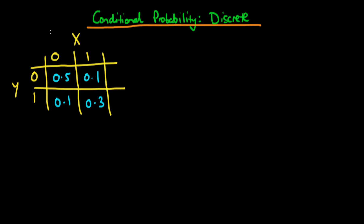I'm going to use the same example as previously, where a random variable X represents whether or not an individual chosen at random from the population actually has a disease. It takes on a value of zero if that individual doesn't have the disease, or a value of one if they do. Similarly, there is another random variable Y which represents whether or not an individual has symptoms for that disease, taking a value of zero if they're not symptomatic and one if they are.